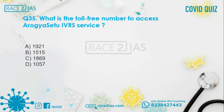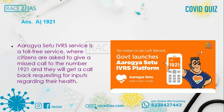Question number 35: What is the toll-free number to access the Arogya Setu IVRS service? Option A: 1921. Option B: 1515. Option C: 1969. Option D: 1050. The right answer is Option A, 1921. The Arogya Setu IVRS service is a toll-free service where citizens give a missed call to 1921 and receive a callback requesting inputs regarding their health.